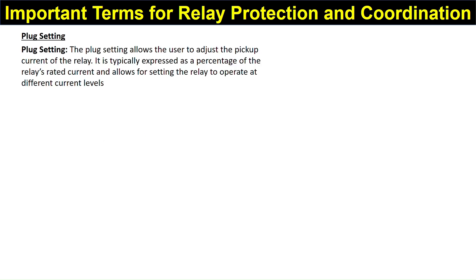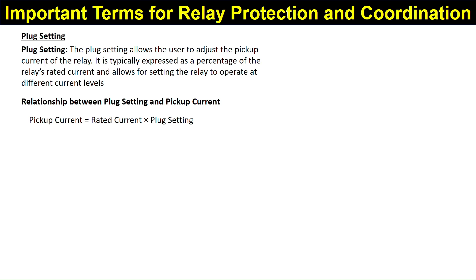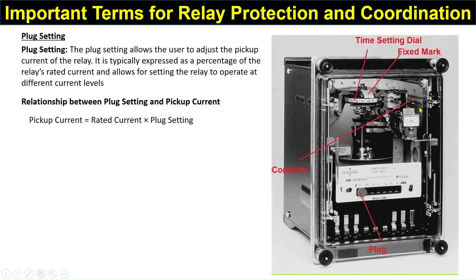Plug setting allows users to adjust the pickup current of the relay. It is typically expressed as a percentage of the relay's rated current and allows setting the relay to operate at different current levels. The pickup current equals the rated current multiplied by the plug setting. On the relay, the time dial (TMS) setting and the plug setting are adjusted at separate locations.